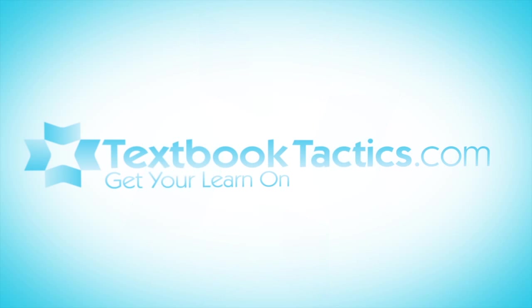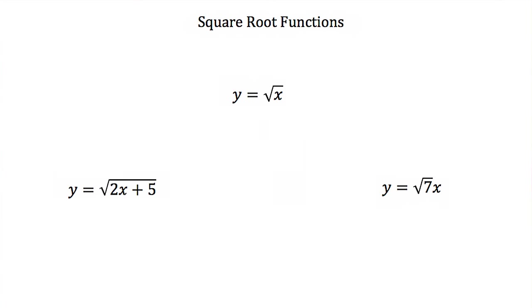This is a tutorial on square root functions. A square root function is just a function that has its variable underneath a square root sign. So here we have y is equal to the square root of x. This is our basic square root function — it's y is equal to x, except our x is underneath the square root.